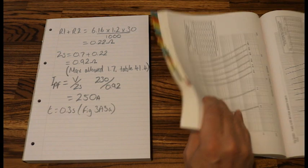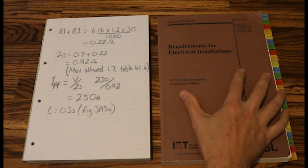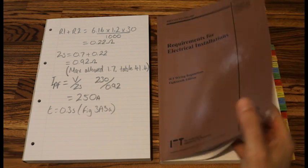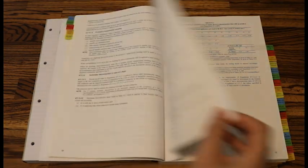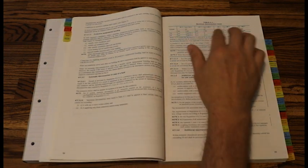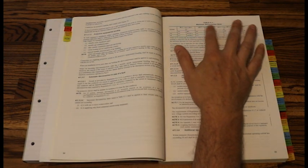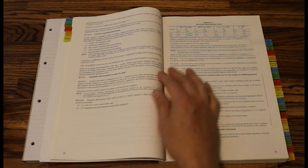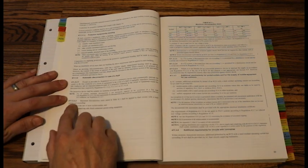Now let's have a look. Where would we find this out in our book? So we looked at our maximum disconnection time tab. Maximum disconnection time, page 65. We find table 41.1, maximum disconnection times.